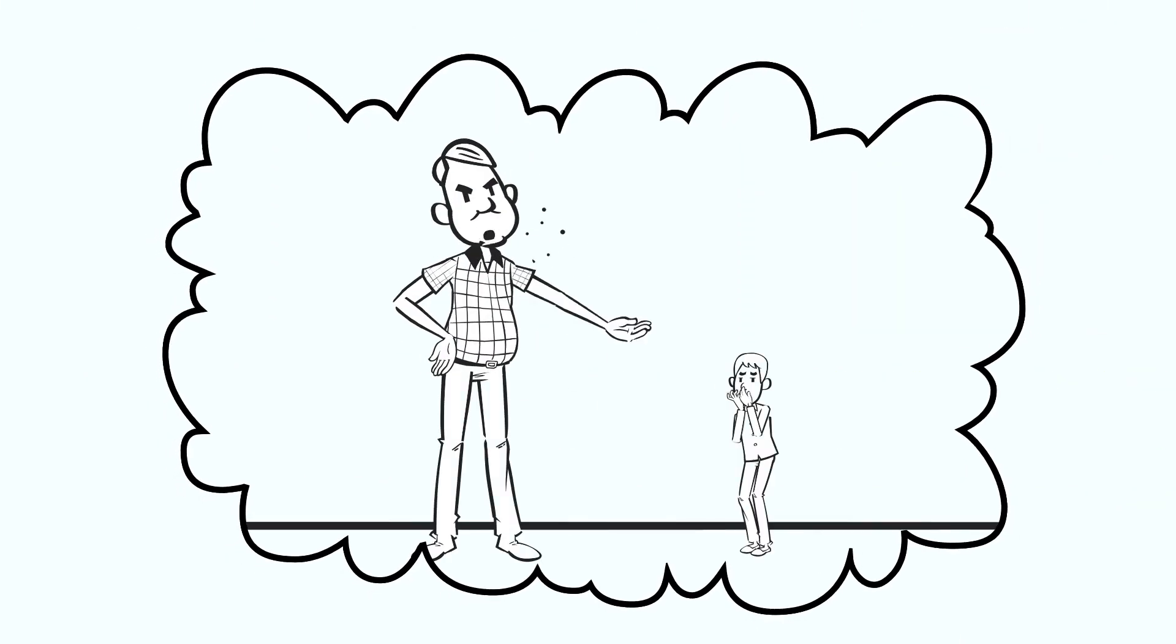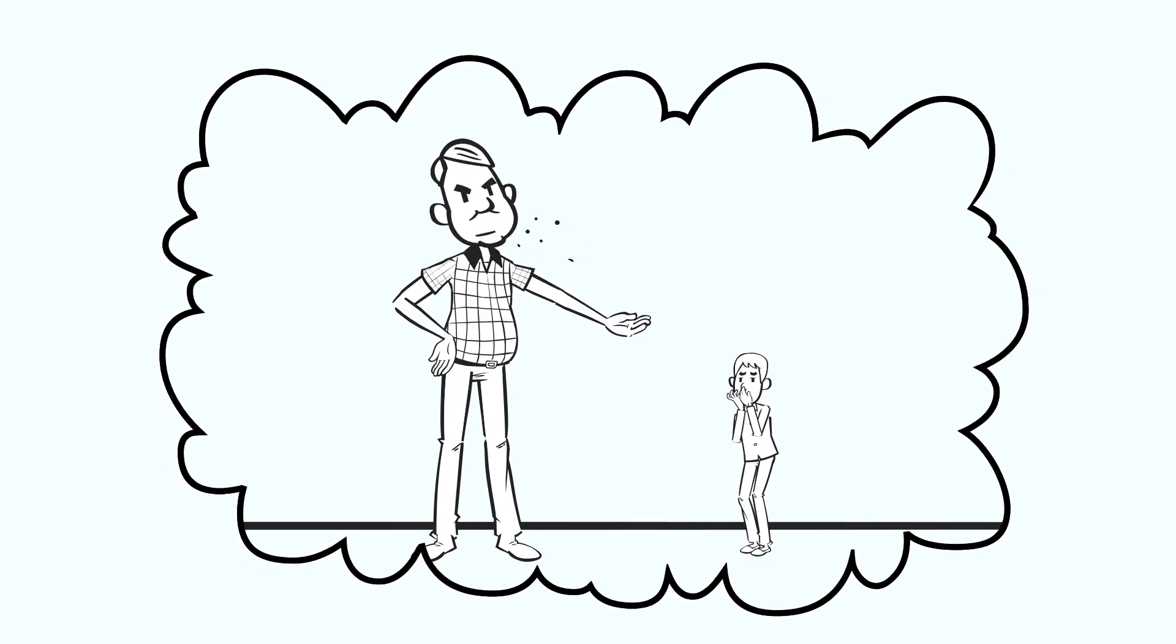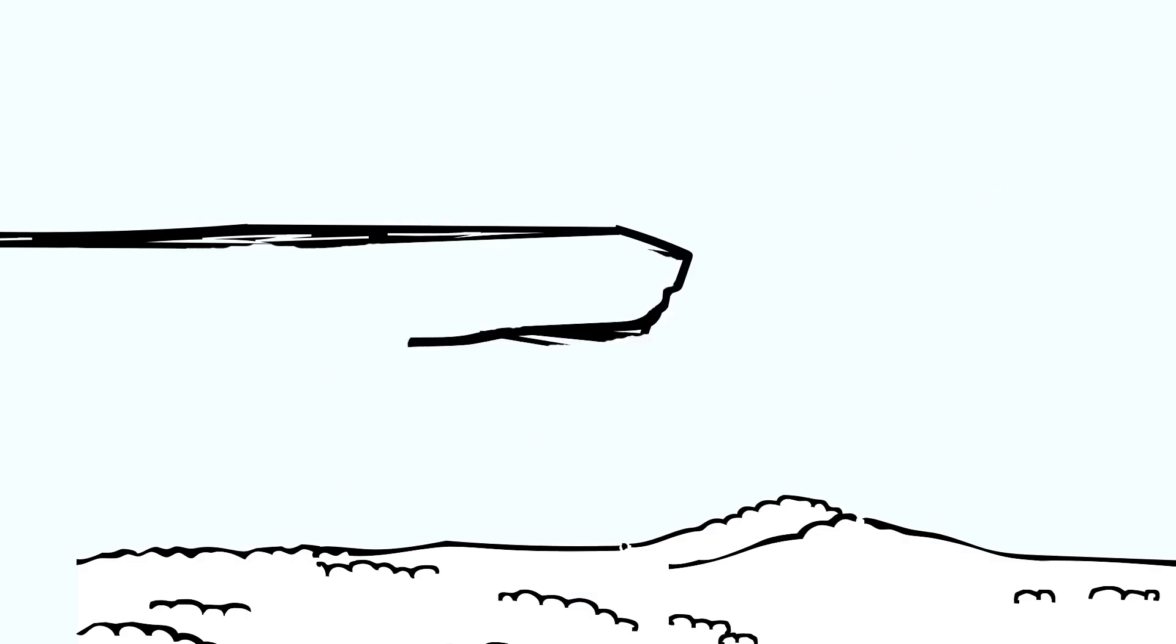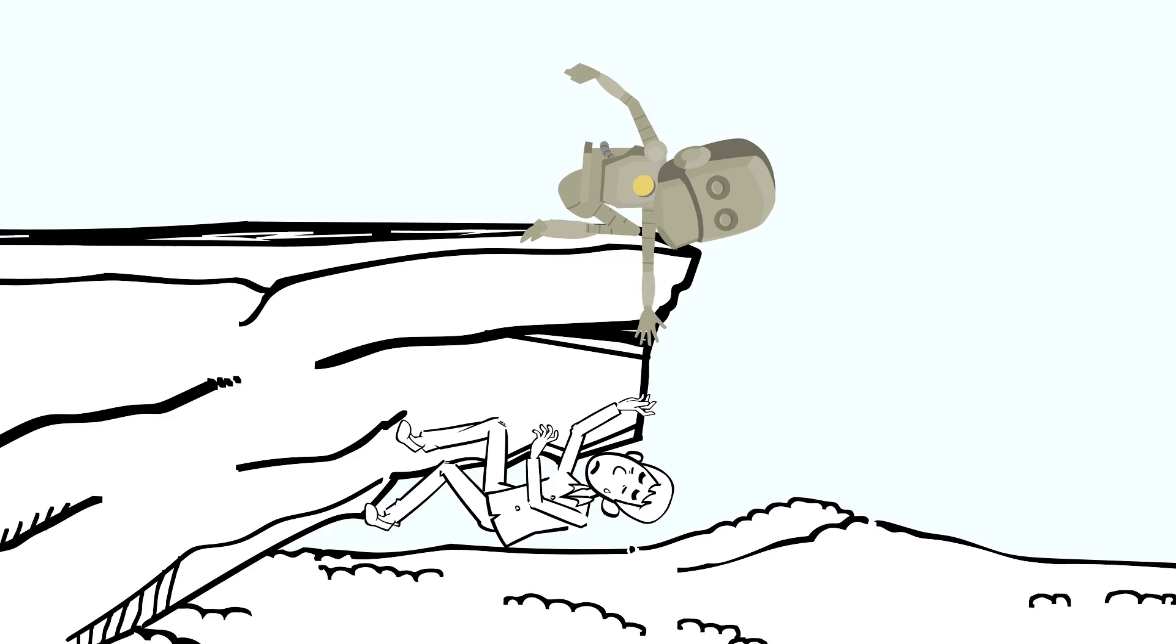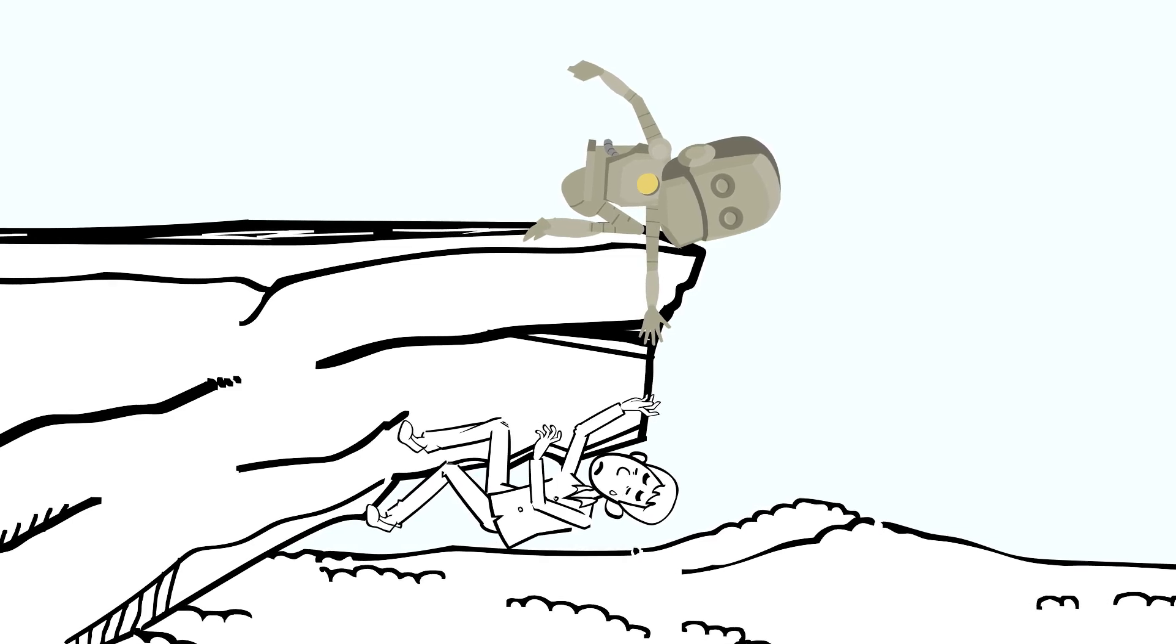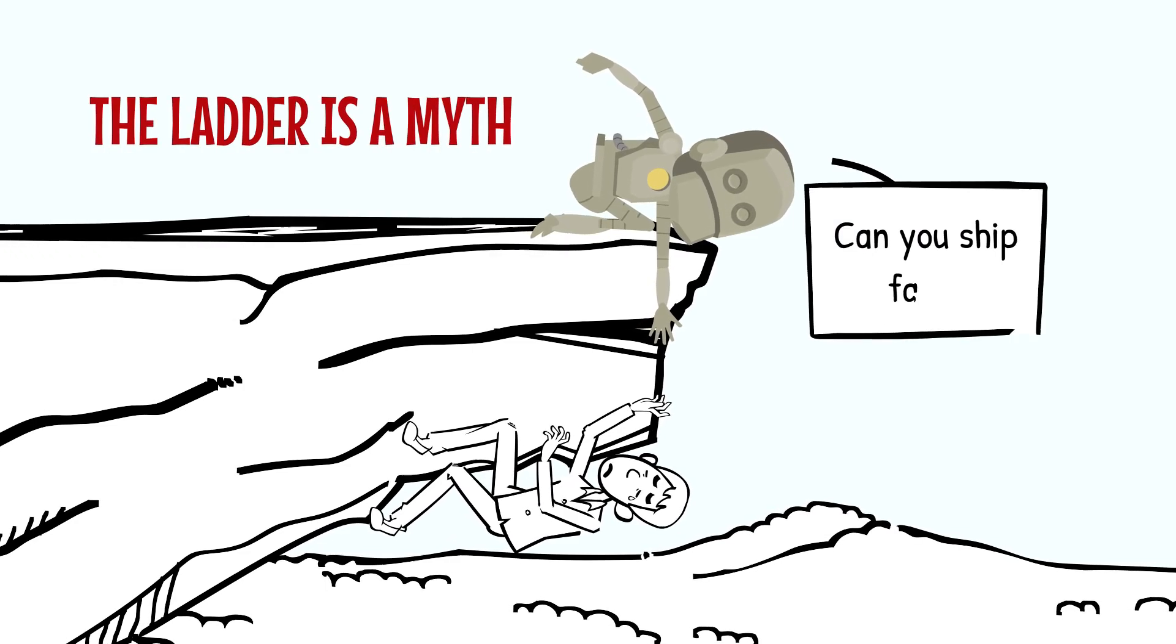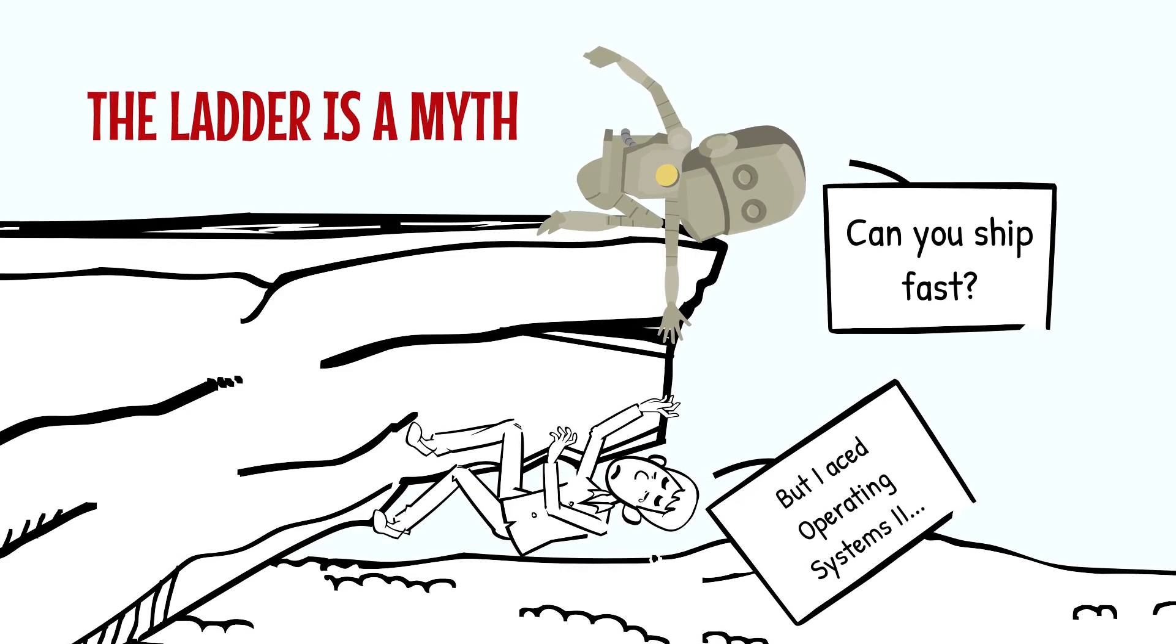We were sold a dream. Study hard. Get good grades. Nail the interviews. Land a job. Scale the ladder. Retire early. But nobody warned us that the entry level has been quietly redefined by AI tools that don't eat, sleep, or ask for raises. According to Business Insider, the ladder isn't just broken, it's gone. Replaced by a cliff you're supposed to scale with no ropes.